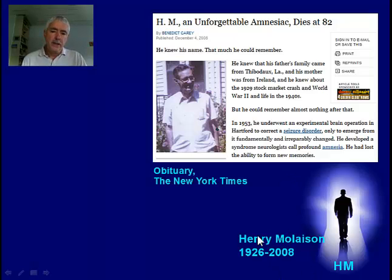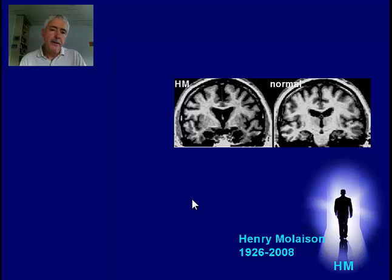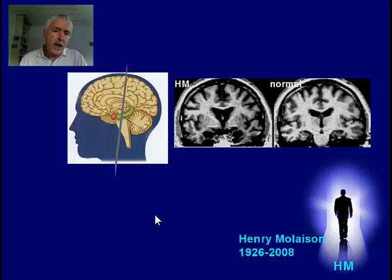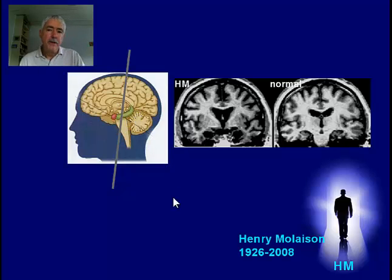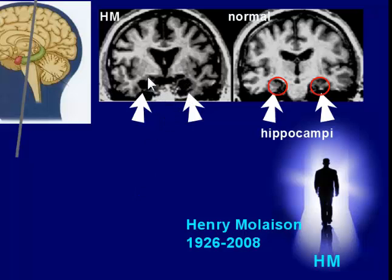Removing the hippocampus did indeed help with the seizure problem, and Henry Mollison lived to a ripe old age. However, he did have severe memory problems. To show you where in the brain this operation was done, here is an MRI — Magnetic Resonance Imaging — of H.M.'s brain compared to a normal brain. This is the highest resolution brain imaging currently available. You can see the hippocampus highlighted in green. In the normal brain there is brain tissue on both sides, but in H.M., all you see are dark holes where the hippocampi were removed.